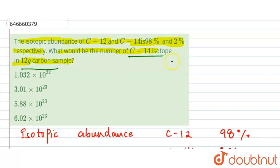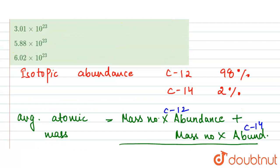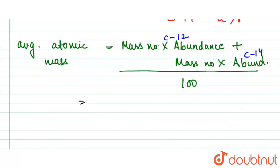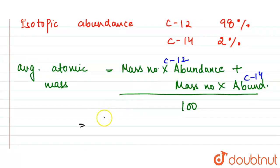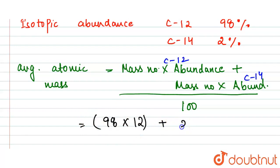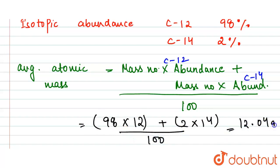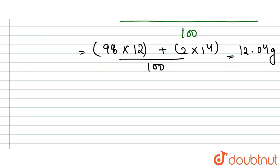Here, 12 and 14 are our mass numbers for C-12 and C-14. Putting in the values: (98 × 12 + 2 × 14) / 100, our average atomic mass comes out to 12.04 grams.